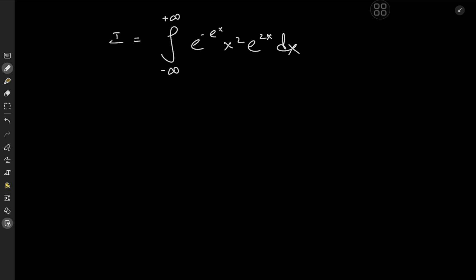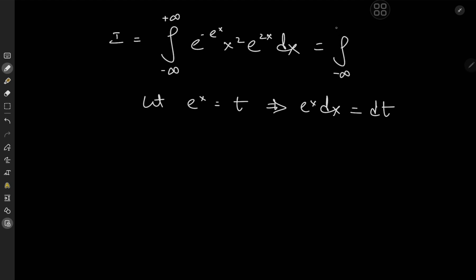Well, we have lots of exponential functions. So we might as well begin by letting e to the x equal t, which implies that e to the x dx equals dt. And we have one of those — this thing is the integral from negative to positive infinity of e to the minus e to the x, times x squared, times e to the x, times e to the x dx.